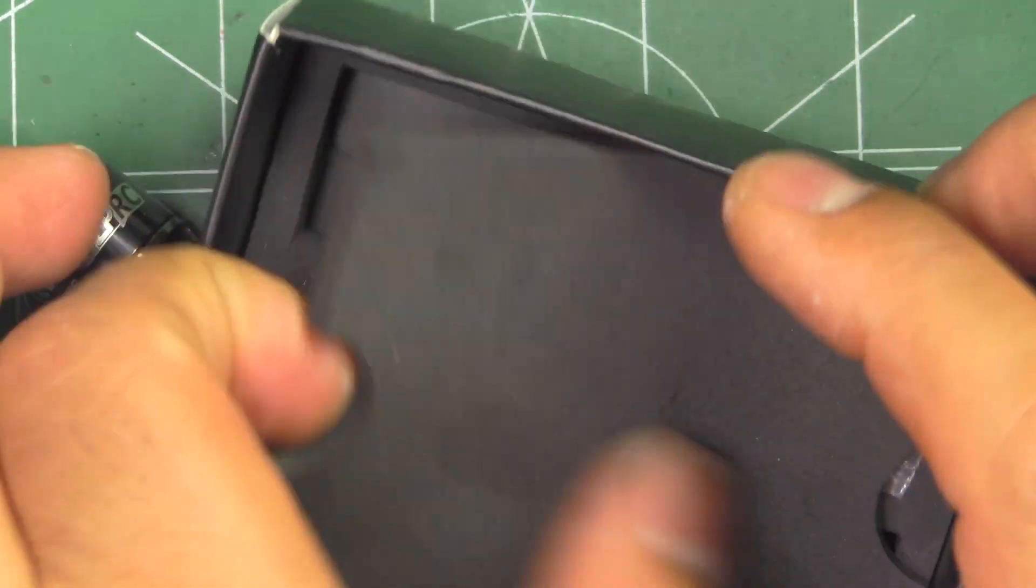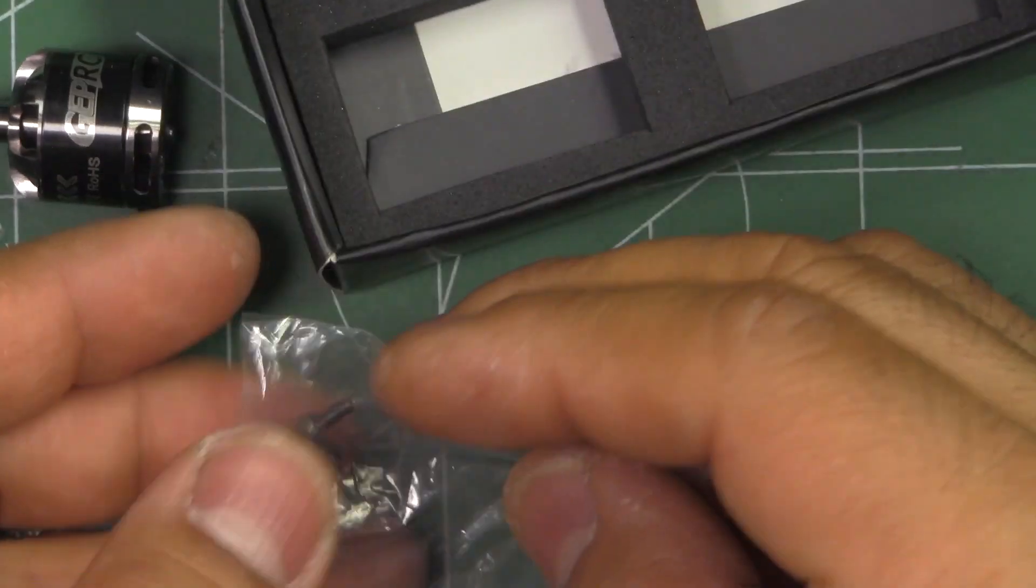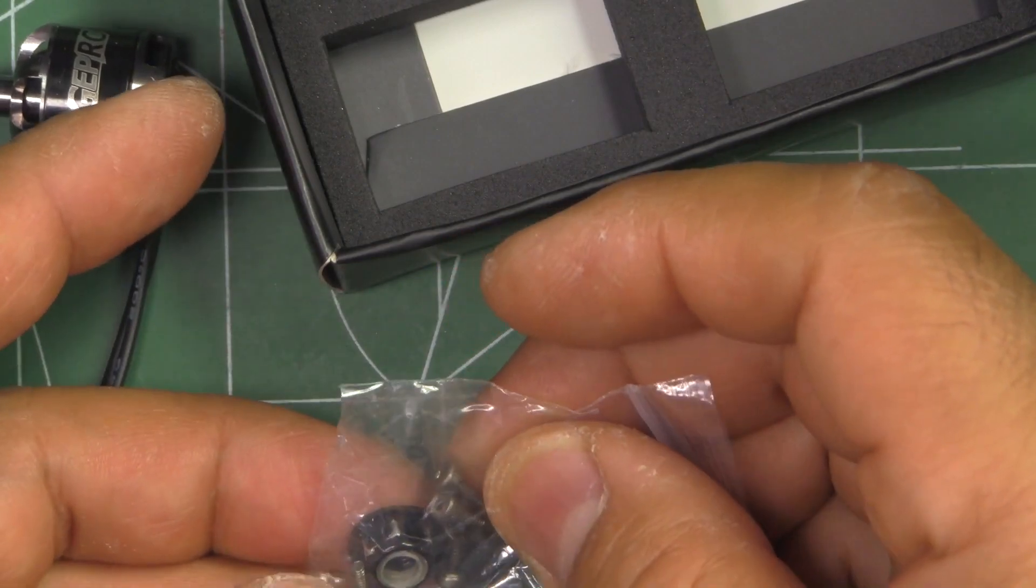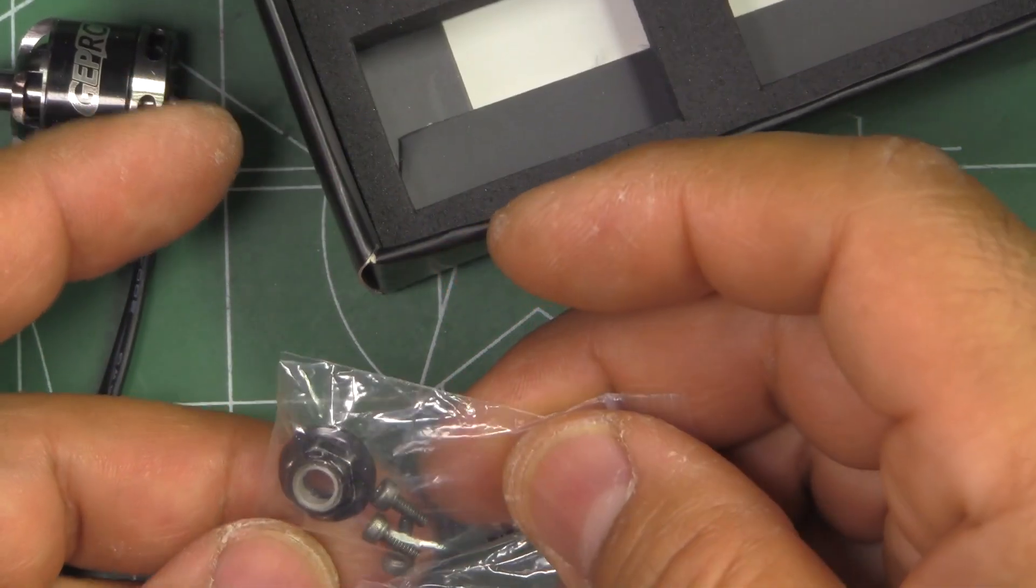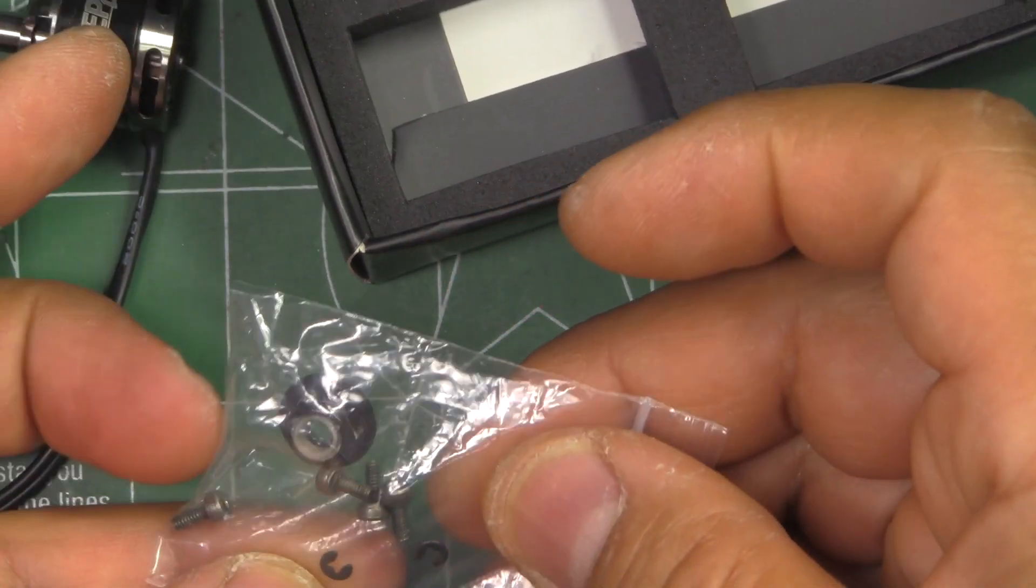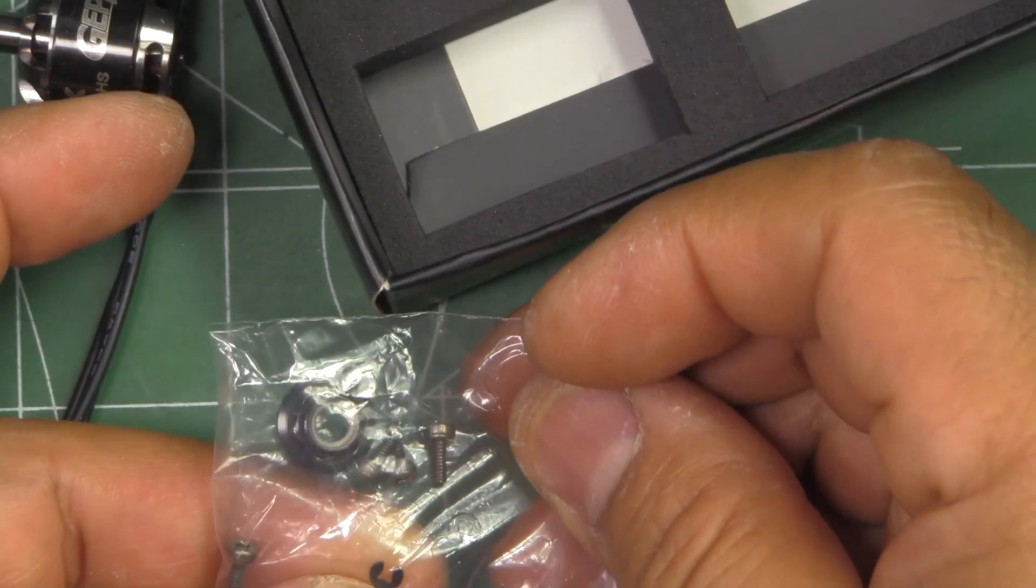So they send it to you in this box with a nice dense foam. They just give you pretty standard stuff - a few mounting screws, very very short screws. Oh I see they give you some extra E-clips.